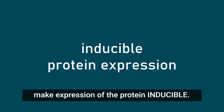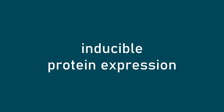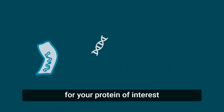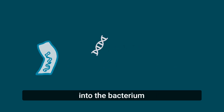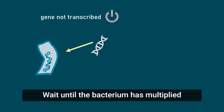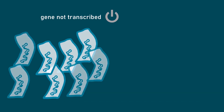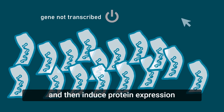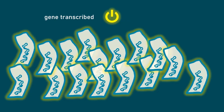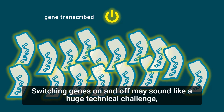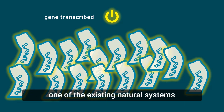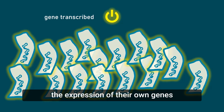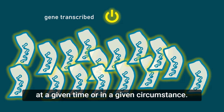Make expression of the protein inducible. In other words, insert the gene for your protein of interest into the bacterium in such a way that the gene is not switched on. Wait until the bacterium has multiplied, and then induce protein expression by switching on the gene. Switching genes on and off may sound like a huge technical challenge, but in fact we can simply harness one of the existing natural systems whereby organisms can control the expression of their own genes at a given time or in a given circumstance.